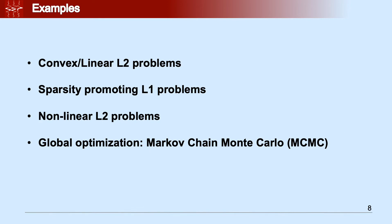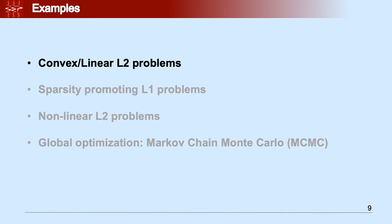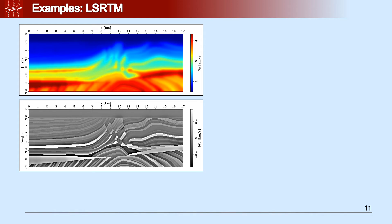So now let's jump into the examples, the most interesting part of this presentation. Let's have some convex L2 norm problems. In this application, we're going to show you how to use the library to solve a least-square RTM problem. We took the Marmousi model, smoothed it a little bit, took the difference between the true and constructed the reflectivity shown here in the bottom.